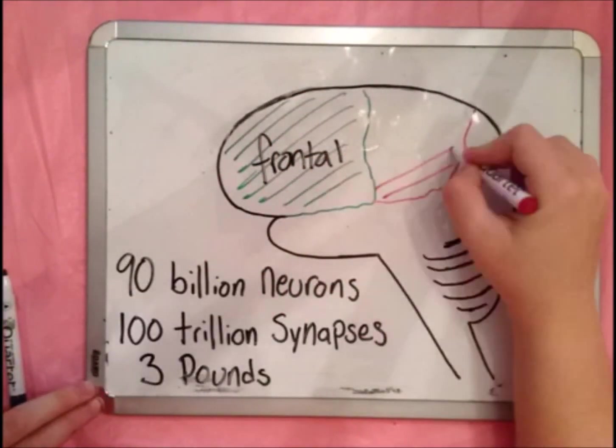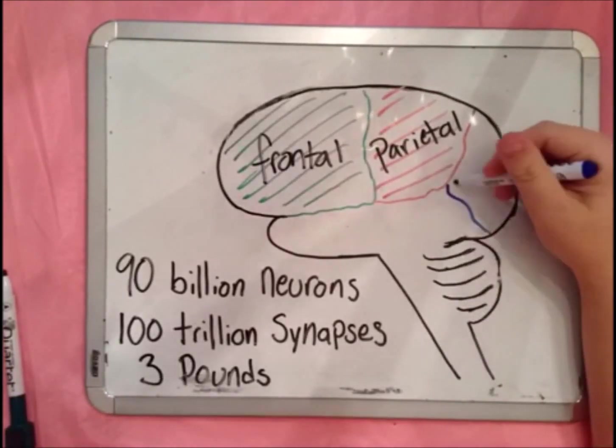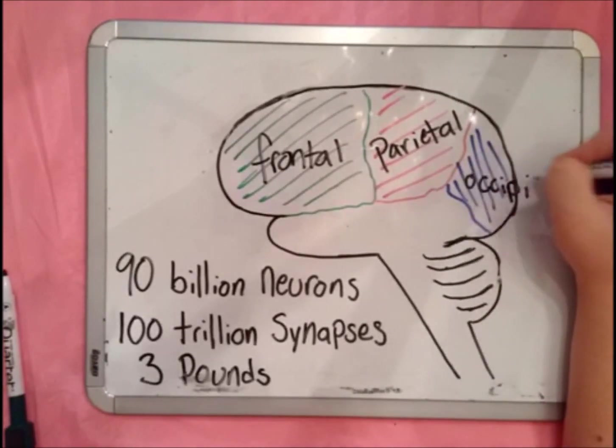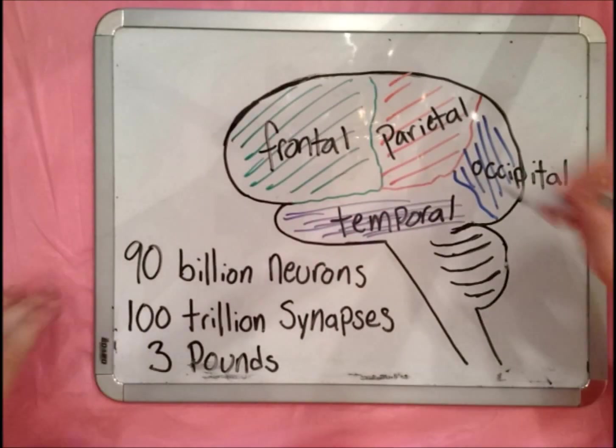The frontal controls movement, planning, and creativity. The parietal controls sensations like touch, pressure, temperature, and pain. The occipital is responsible for sight, and the temporal controls hearing and memory.